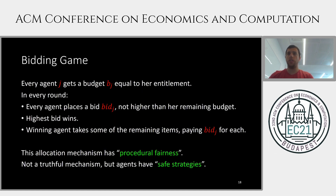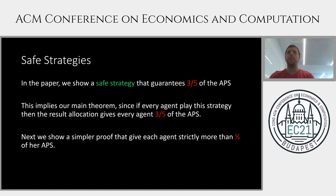We prove our main result using a bidding game. Every agent starts with their entitlement as a budget, and in every round, all agents place a bid of at most their current budget. The highest bidder wins and can purchase any number of items, paying their bid for each. This mechanism is not truthful but has procedural fairness in the sense that it does not a priori favor any agent. We show that in this game there are safe strategies guaranteeing a good approximation to the any-price share — specifically, at least 3/5 of the APS — and if all agents play their safe strategy, the resulting allocation gives every agent at least 3/5 of their APS.